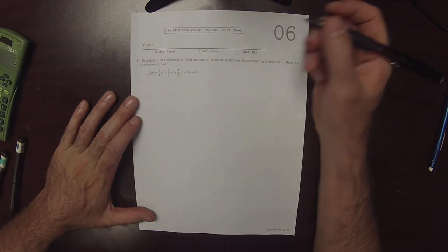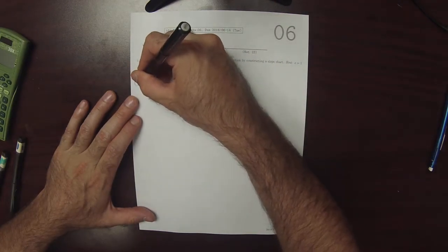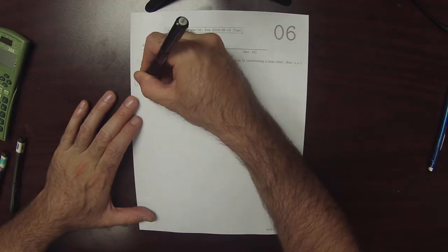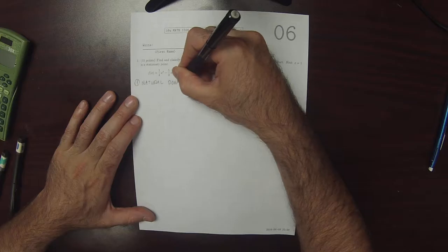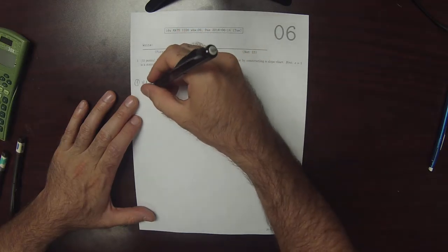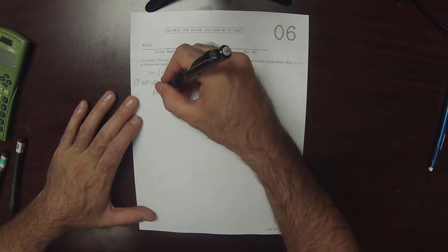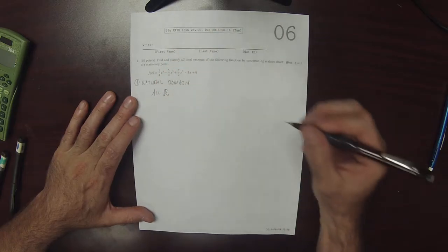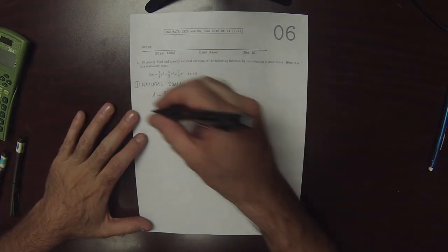So the first step is to check the natural domain. Because f is a polynomial, the natural domain is all reals. There's no breaks in the natural domain.